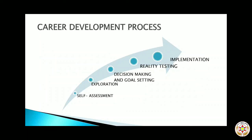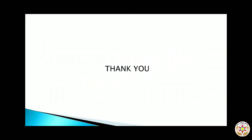The career development process implemented by the HR manager is a five-step process. Step one: self-assessment — done by the employee to determine where he wants to go in the future. Step two: exploration — he searches different options to fulfill his career needs. Step three: decision making and goal setting — deciding how he can develop his career. Step four: reality testing — determining within the same organization how he can achieve career development. Step five: implementation — implementing those decisions. This is the process through which career development takes place. Thank you so much.